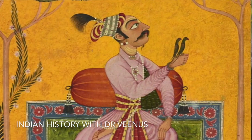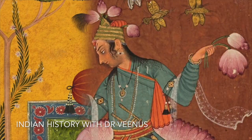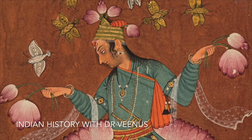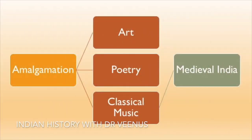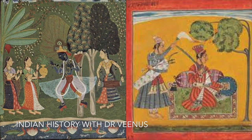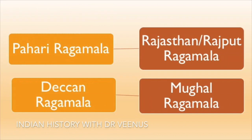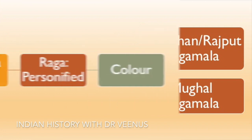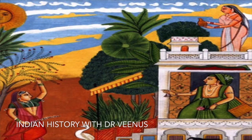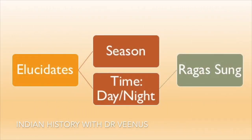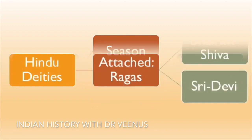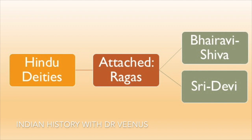Ragmala paintings are a series of illustrative paintings from medieval India based on the Ragmala or Garland of Ragas. They are a classical example of the amalgamation of art, poetry and classical music in medieval India. Created in most Indian schools starting in the 16th and 17th centuries, they are named Pahadi Ragmala, Rajasthani (Rajput) Ragmala, Deccan Ragmala and Mughal Ragmala. Each Raga is personified by a color describing the story of a hero and heroine (Nayak and Naika) in a particular mood. Many paintings also demarcate specific Hindu deities attached to the Raga — like Bhairav or Bhairavi to Shiva, and Sri to Devi.